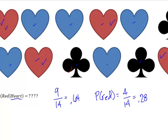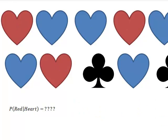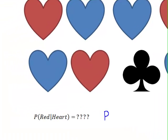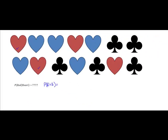But what this question is asking me is what's the probability that I got red given that I got a heart. So what I'm simply going to do is I'm going to say it's the probability of both. So it's the probability that I got red and a heart. Well that was one, two, three, four.